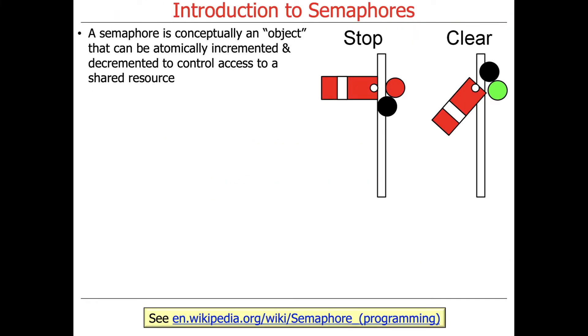So what is a semaphore? A semaphore is conceptually an object that can be atomically incremented and decremented to control access to a shared resource.